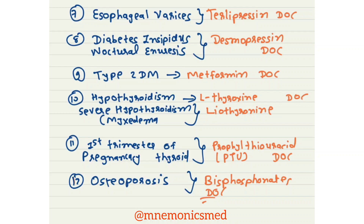Drug of choice for thyroid conditions in the first trimester of pregnancy is Propylthiouracil. Drug of choice for osteoporosis is bisphosphonates.